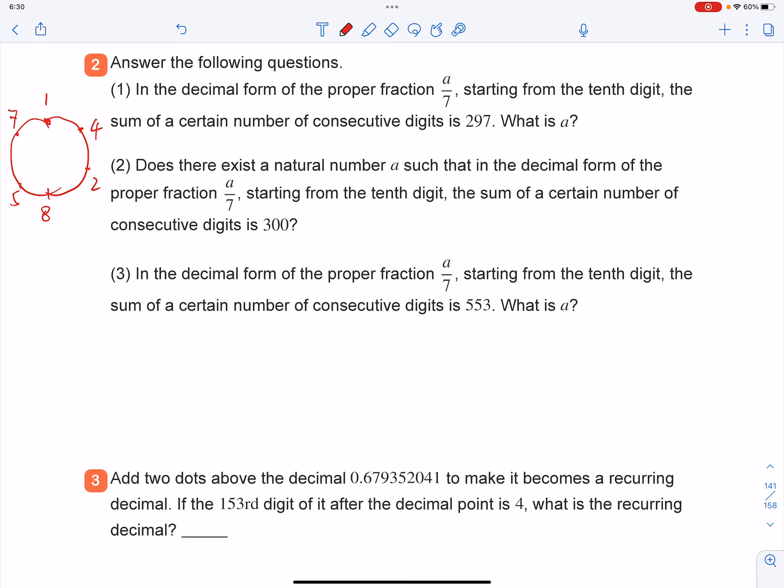And if the question tells you that the sum of some certain consecutive digits is 297, what is A? So you're going to do 297 divided by 27, which is the sum of all that six numbers. And you'll see that equals to 11. There's no remainder.